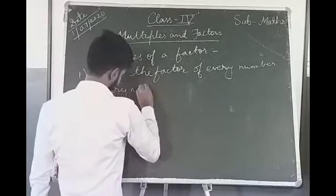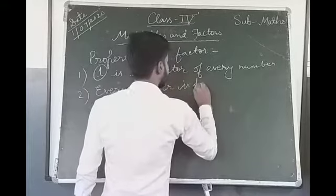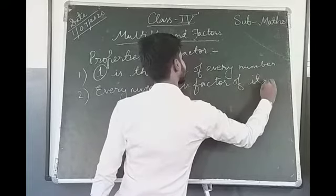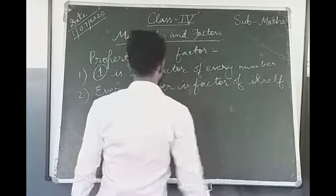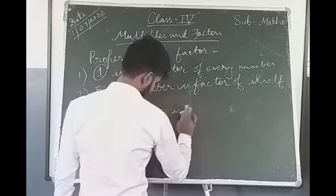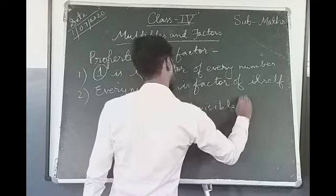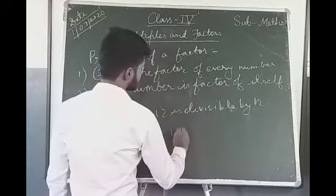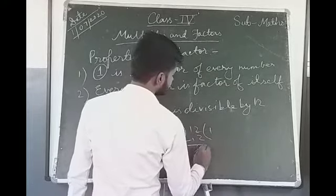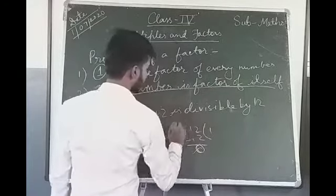Property 2: Every number is a factor of itself. For example, 12 is divisible by 12, giving quotient 1 with remainder 0. So we can say that every number is a factor of itself.